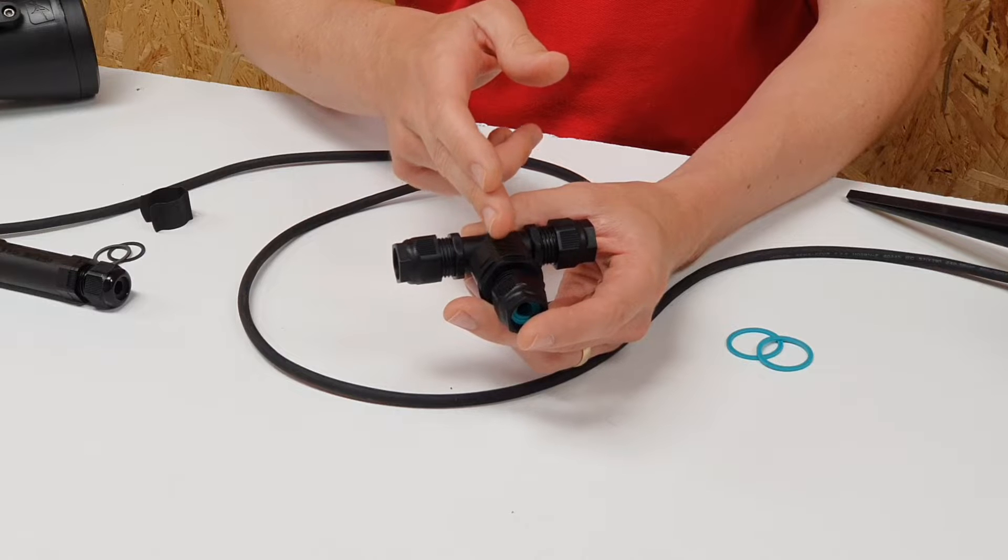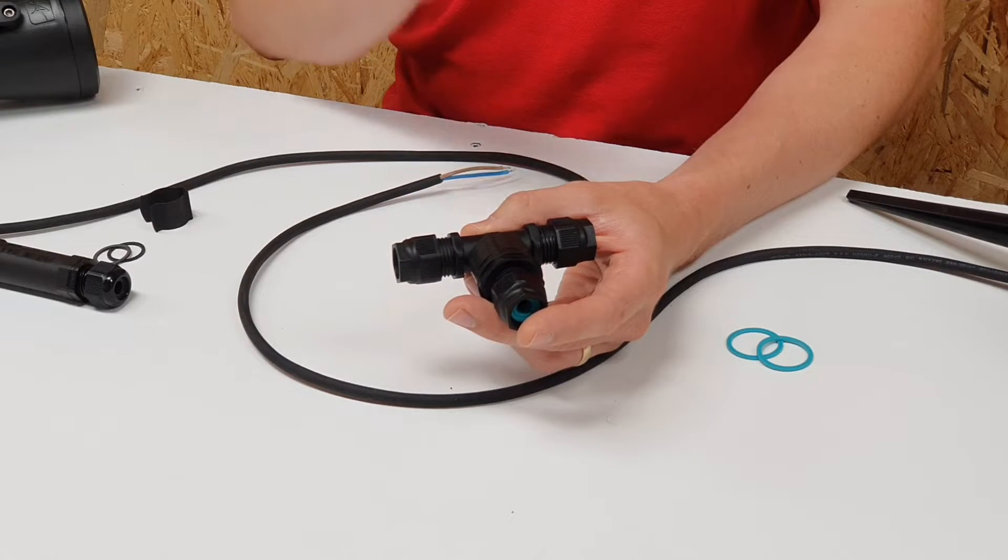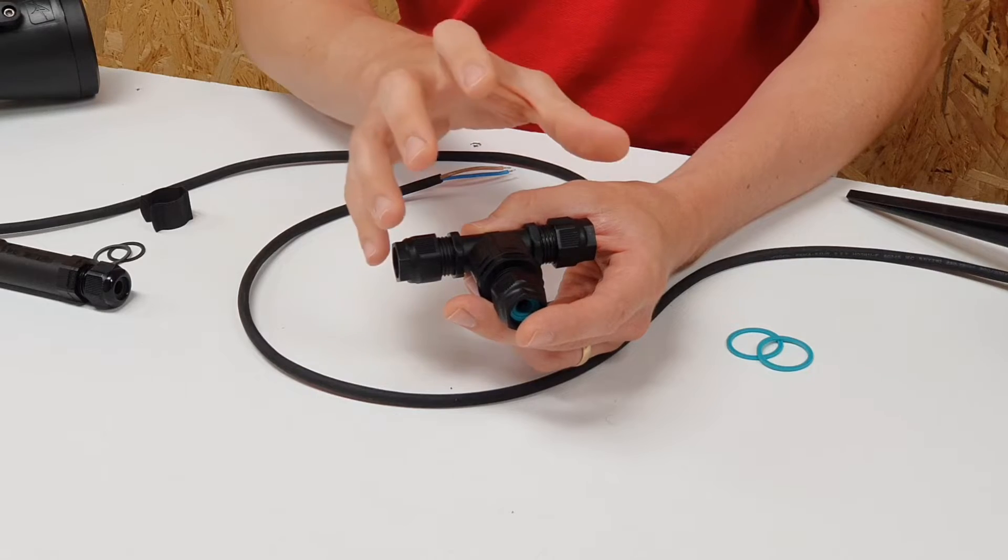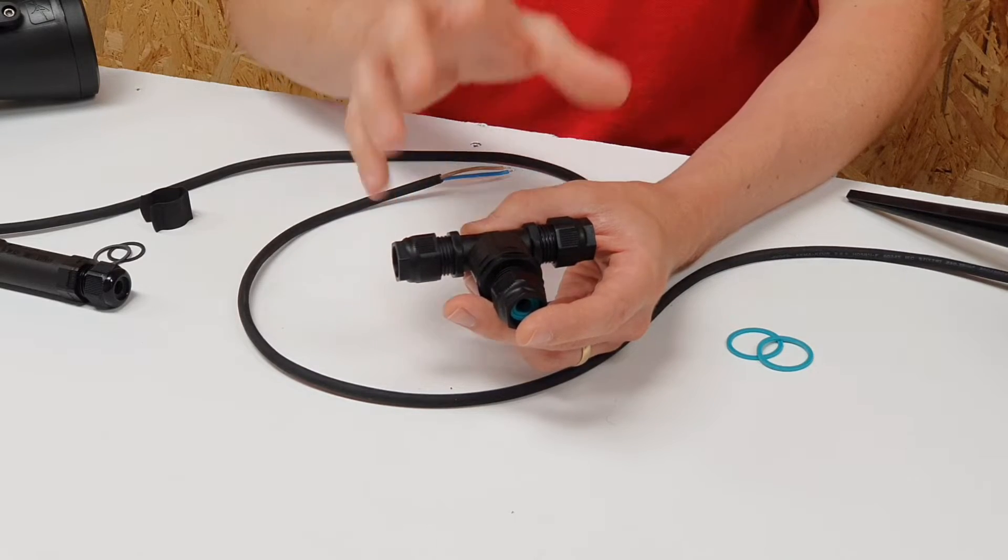Now this one is a three pole connection which has four millimeter squared terminals and has a rating of 32 amps which is just amazing for such a small connector. So let's see it in action.